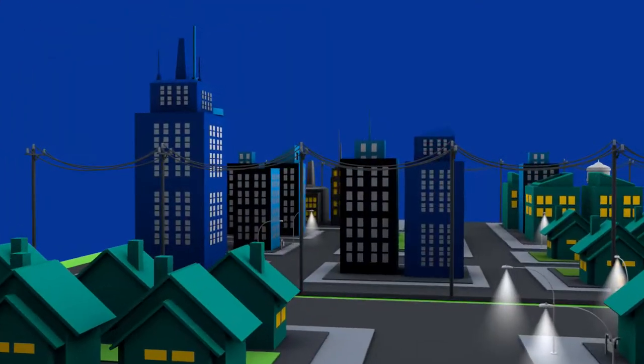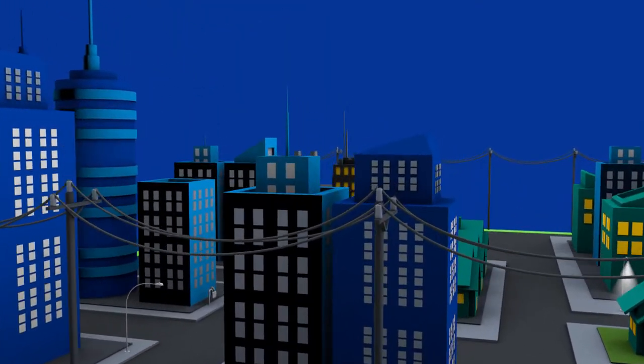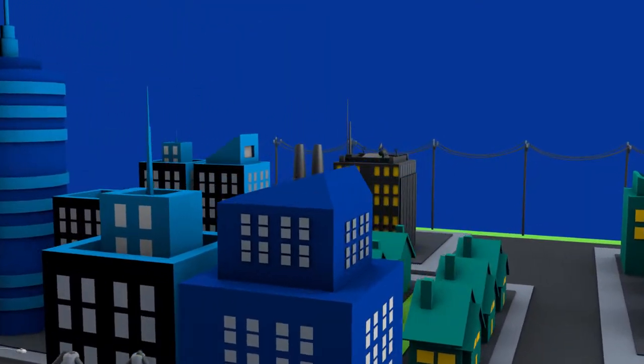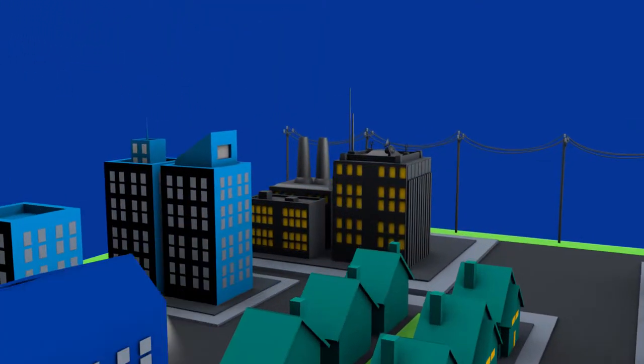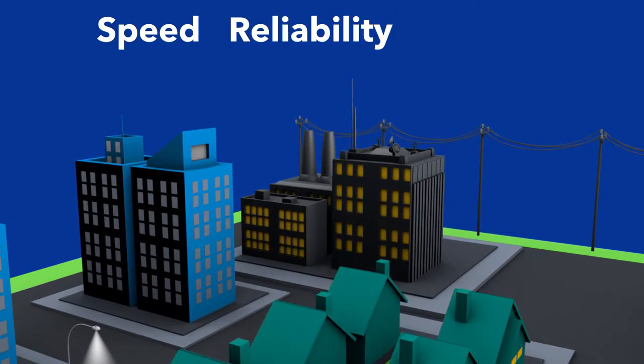You can't control when outages happen, so choose a distribution automation solution that offers the speed, reliability, and security you need — without the constraints.